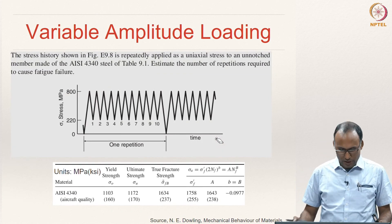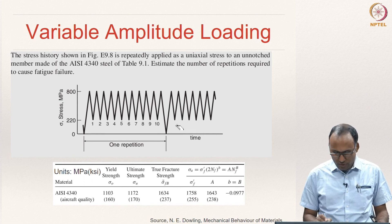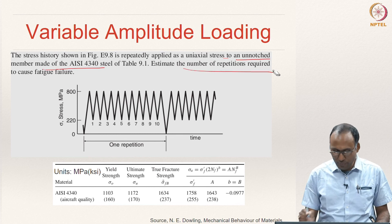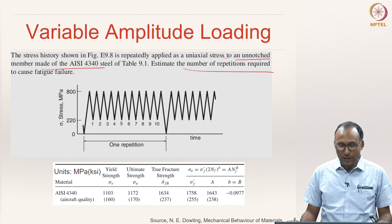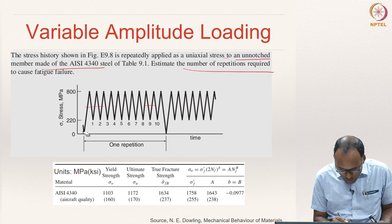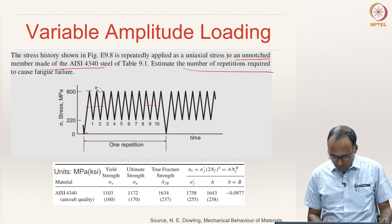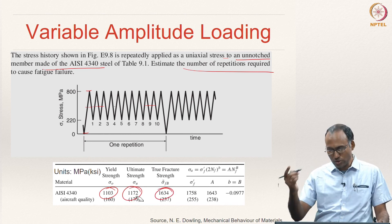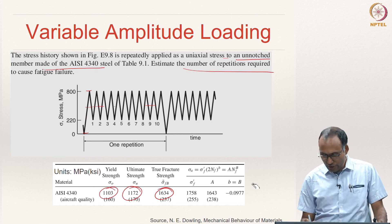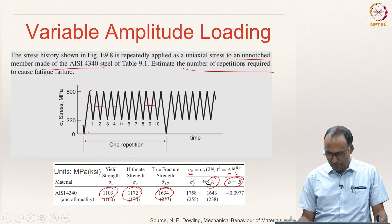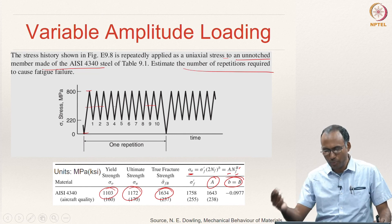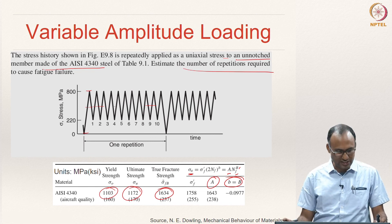Now you can solve this problem: a stress history is shown — this is one repetition — which is repeatedly applied as a uniaxial stress to an unnotched member of AISI 4340 steel. Estimate the number of repetitions required to cause fatigue failure. You have the yield strength, ultimate strength, and true fracture strength of this material, and S = A·N^B where A and B are given as sigma a = A·N^B. Based on that one can calculate how many repetitions are allowed using the methodology already described.